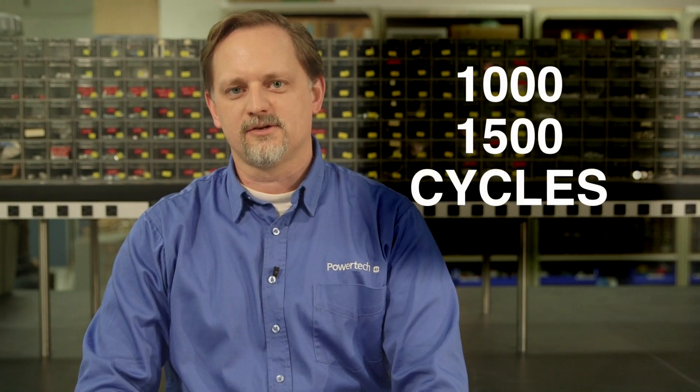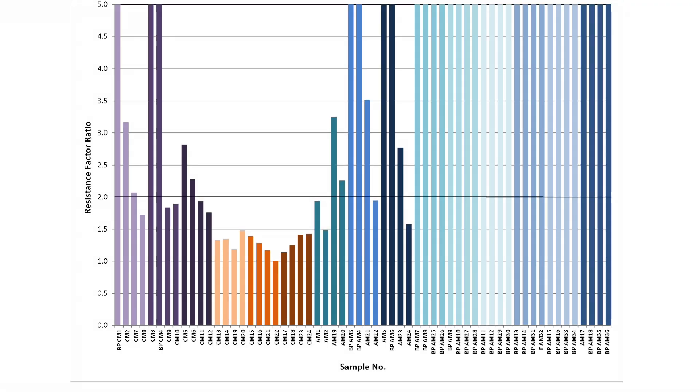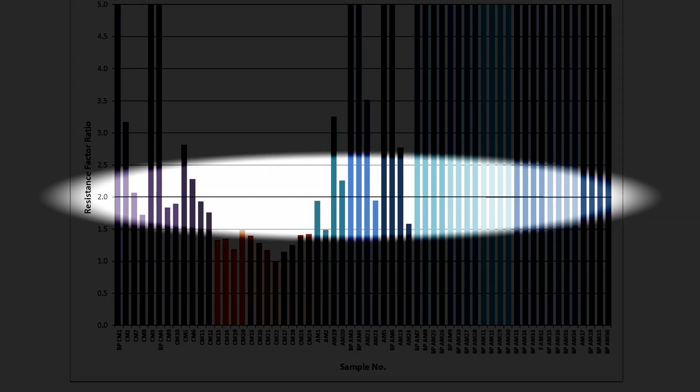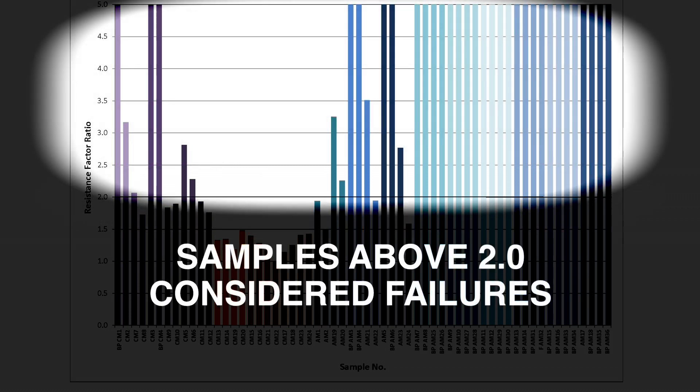Resistance and temperature values were recorded throughout the test and were evaluated at a thousand and 1500 cycles. This chart shows an evaluation of the resistance after a thousand cycles using the method from the IEC standard. Each vertical bar represents one test sample. The height of each bar is the ratio of resistance at a thousand cycles compared to the resistance at the start of the test. The line at the ratio of two indicates the maximum allowable ratio according to the IEC standard. A resistance ratio above this line is considered a failure according to IEC.